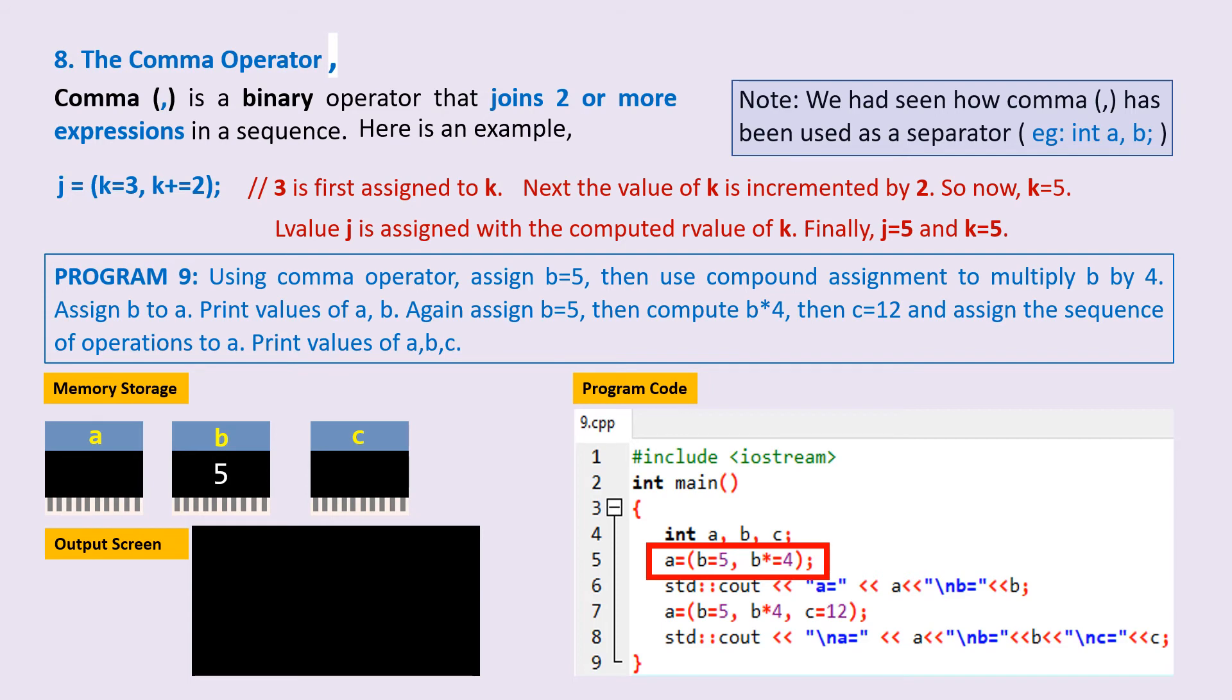Then b is multiplied by 4, and the result 20 is stored in b. Remember that on line 5 of the program, the result of entire computation on RHS has to be stored in the memory location which is specified on the LHS. So here, 20 is stored in a.